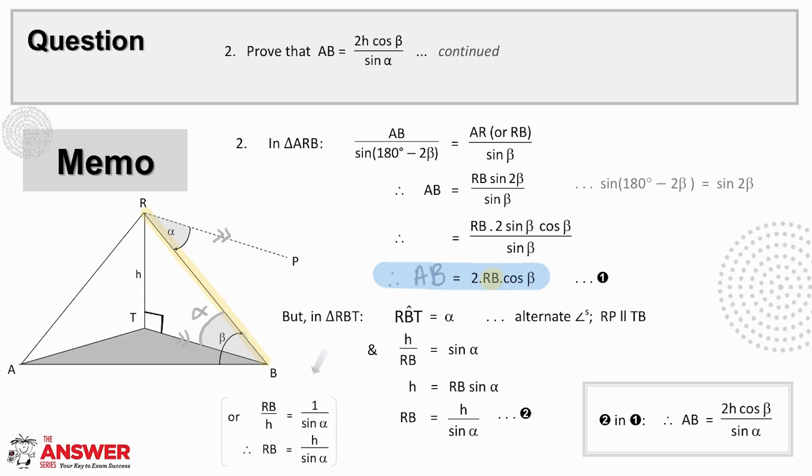An alternative method here, which is slightly trickier in terms of trig but easier on the algebra, is to place RB on the top left of the equation because that is what we need to find. This then means it'll be RB over H which is the inverse of sine alpha and so it'll equal 1 over sine alpha. Then by multiplying through by H we get RB equals H over sine alpha.